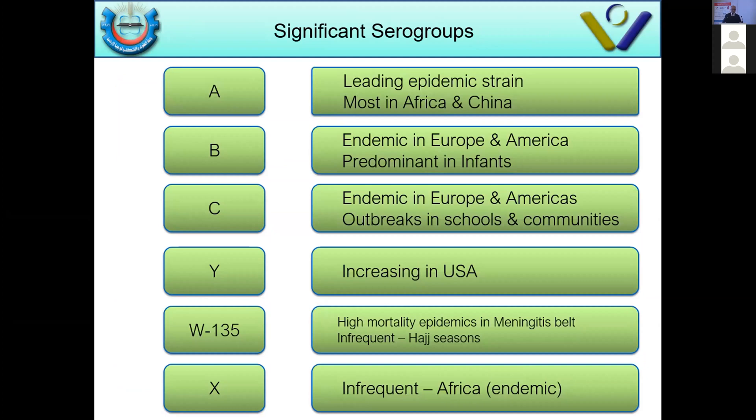Serogroup C is endemic in Europe and America with some outbreaks in schools and communities. Serogroup Y is increasing more in the USA. W135 is associated with Hajj, causing high mortality epidemics in the meningitic belt and during Hajj. Serogroup X is endemic in Africa.